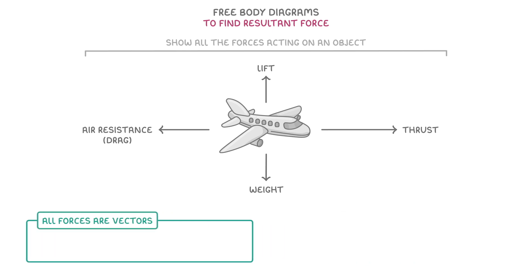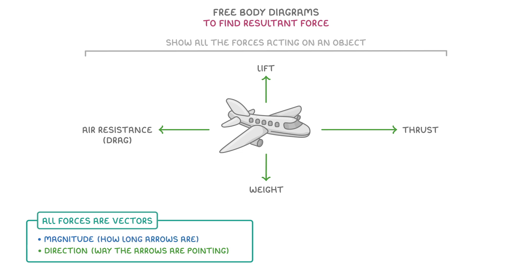Because all forces are vectors, each of these has to have both a magnitude and a direction. We can see the direction from which way the arrows are pointing, but the magnitude of the force comes from how long each of the arrows are. And to be more precise, we can label each of them in newtons.